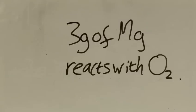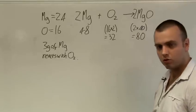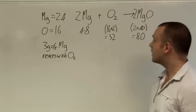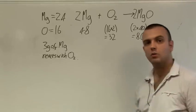So let's say we were asked to work out if we had 3 grams of magnesium reacting with excess oxygen. In other words as much oxygen as needed for the reaction. What mass of magnesium oxide would we have at the end?